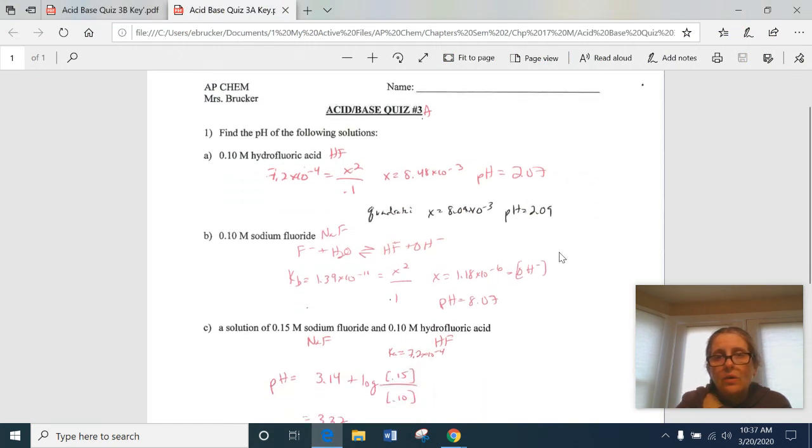So quiz A was probably period five. A couple of things I want to mention about this one. I gave you hydrofluoric acid as trying to find the pH. Hydrofluoric acid has a Ka of 7.2 times 10^-4. So in reality, you probably should use the quadratic on this one. But if you did, you get a pH of 2.09 instead of 2.07.